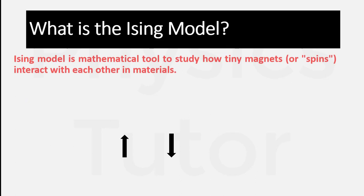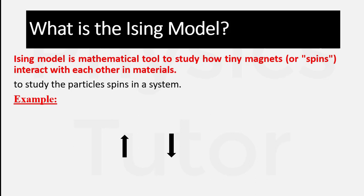In simple words, the Ising Model is a mathematical tool to study how tiny magnets or spins interact with each other in a material. As we see in materials, particles are arranged in a very orderly manner, but with an increase in temperature their positions change and they start spin motion. This spin motion can be shown by integral, half-integral, even or odd numbers.